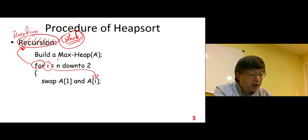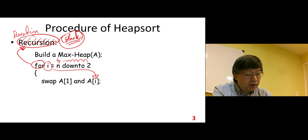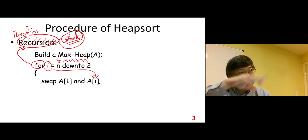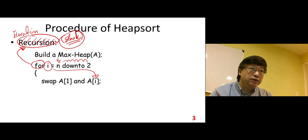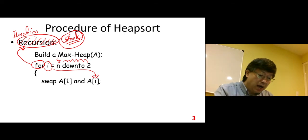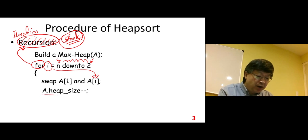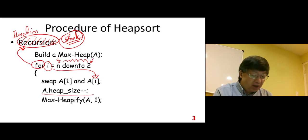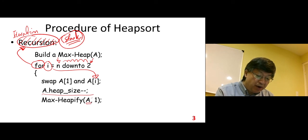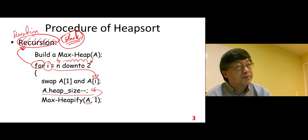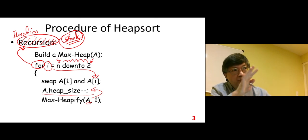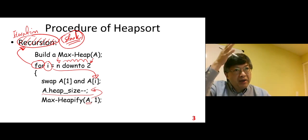Our current heap at the beginning has size n. Then every time we reduce the size by 1 until the last one — the size is 2. Because when the size is 2 we need to do another iteration. If size is 1, we do not need to do iteration — it's already in place. That's why our last heap size is 2. After that, we reduce the heap size by 1, then we do the max heapify. The array A is only applied to the reduced heap size, so we do not touch those elements already in place at the end of the array.